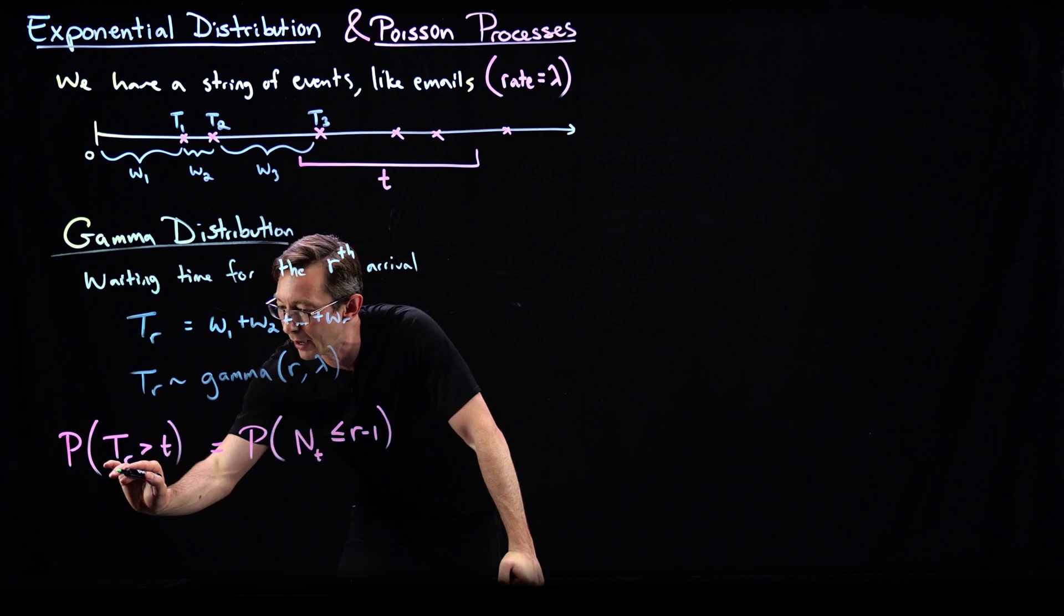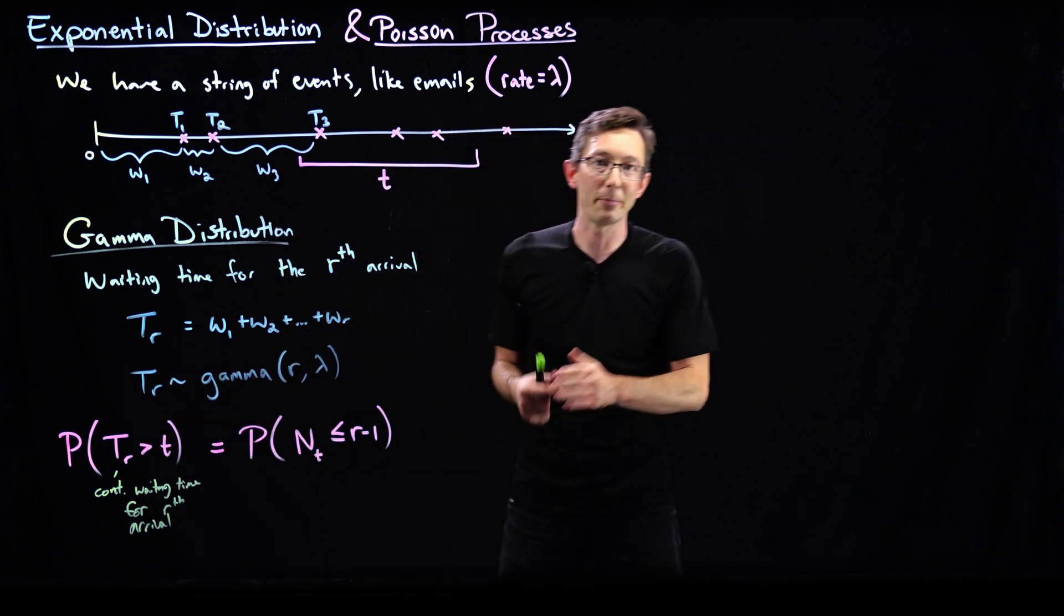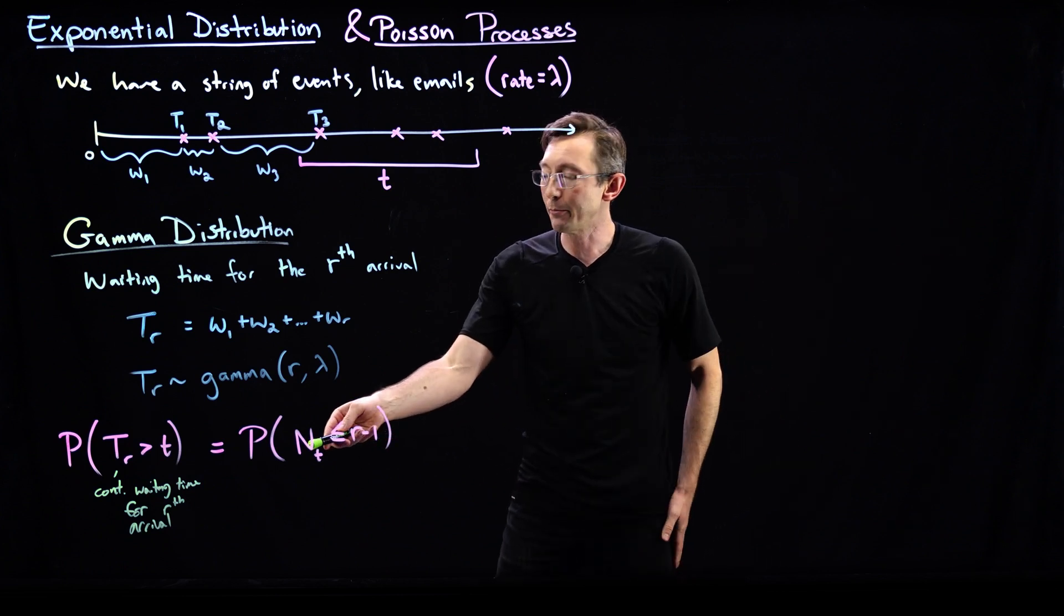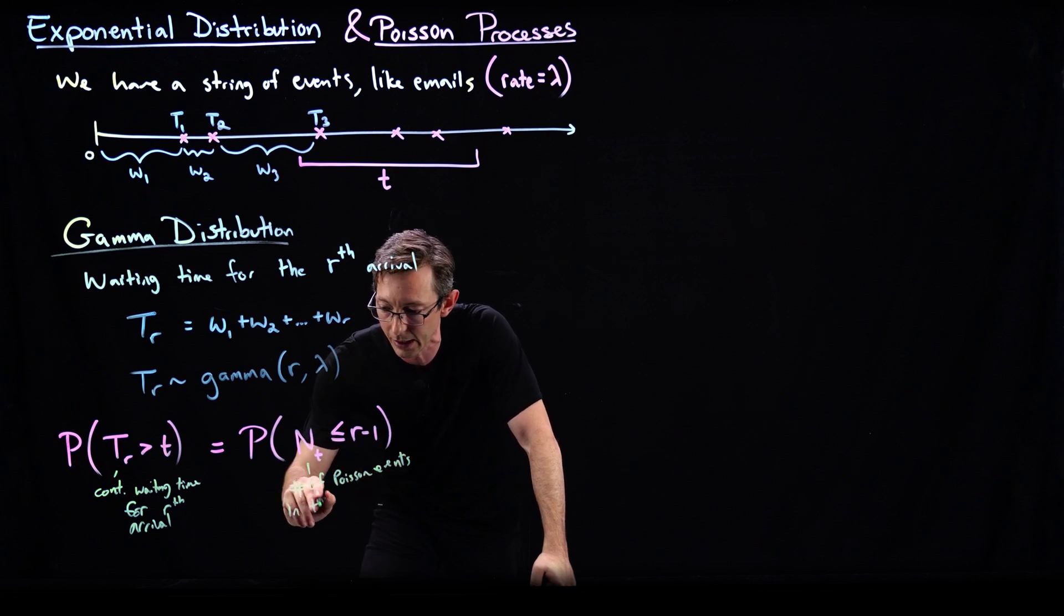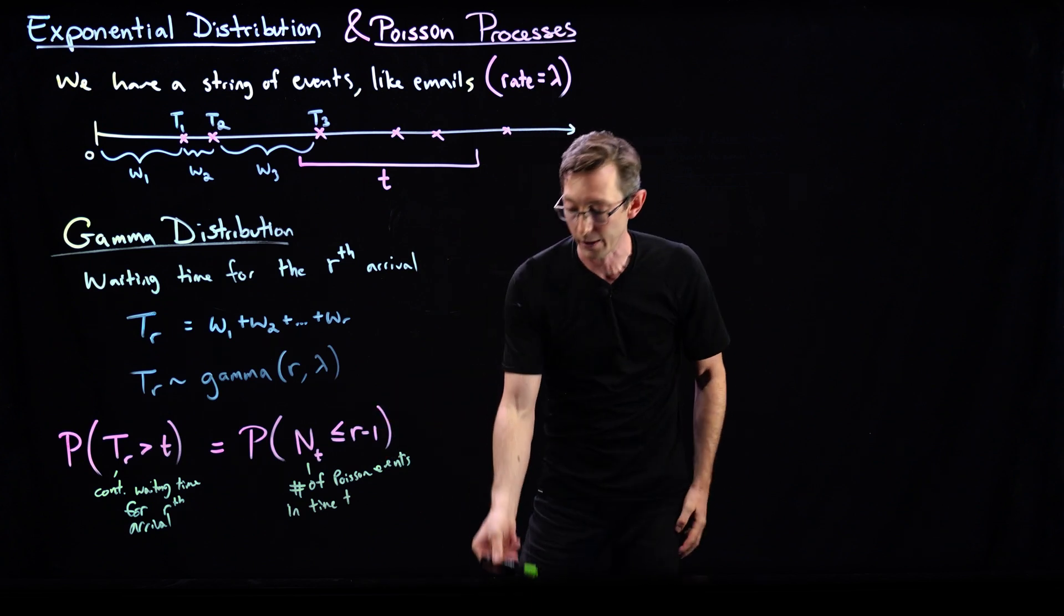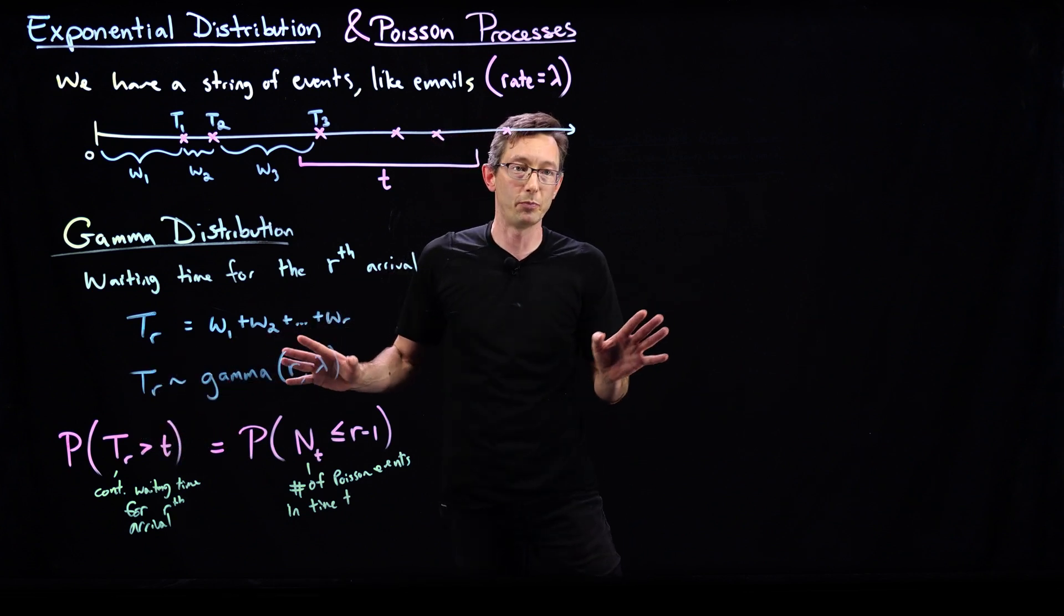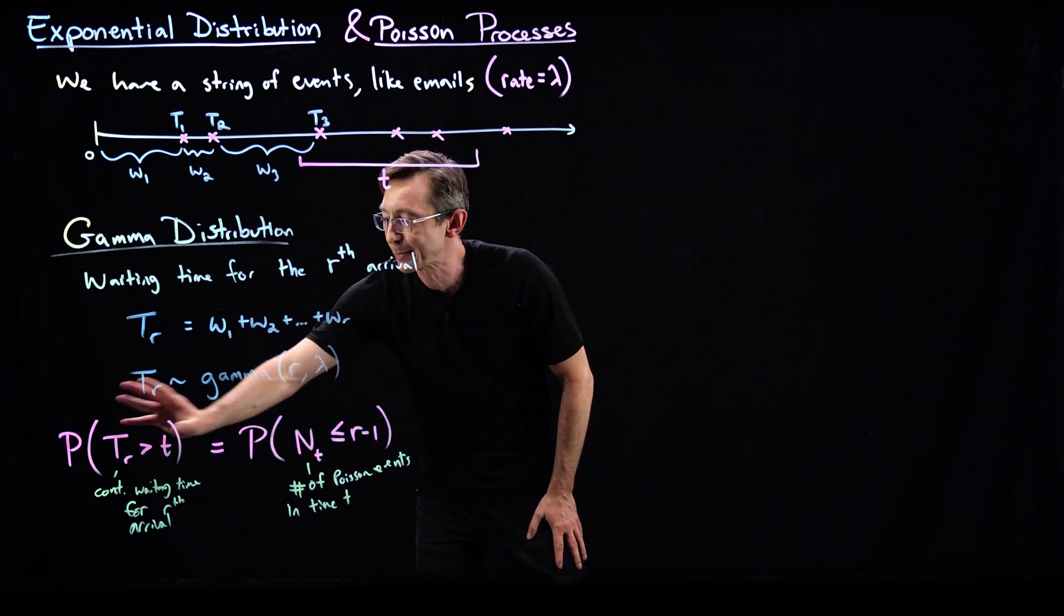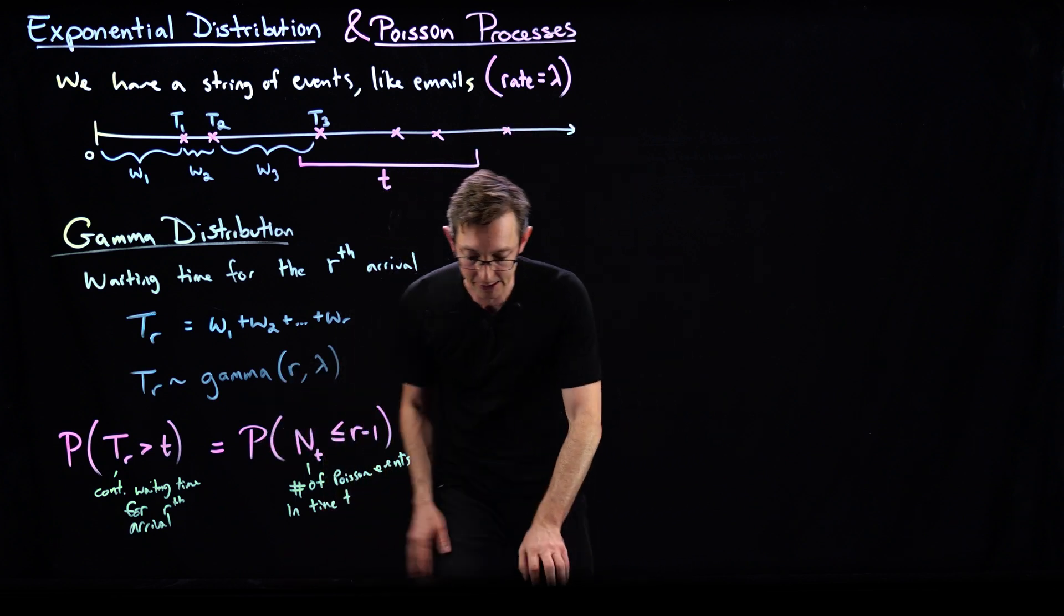I'm going to clarify what I mean. This is the probability that my continuous waiting time for rth arrival, for the rth arrival, is greater than some time t. The only way that that can happen, that my rth arrival is bigger than time t, is that the number of events in that time t, the number of Poisson events, the number of Poisson events in time t, has to be less than or equal to r minus one. If I have r or more Poisson events in time t, then my waiting time for r events is less than time t. This is kind of a tautology. These are equivalent statements. And I'm relating this probability I want to compute this gamma distribution. I'm relating it to something I already know, which is this Poisson distribution.